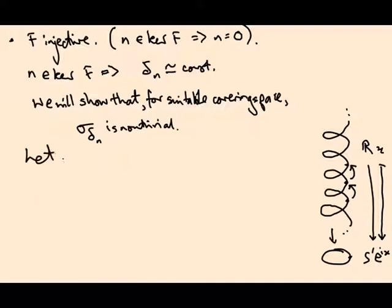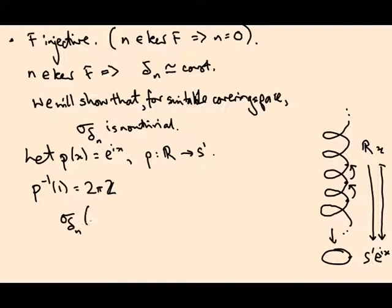So let p of x be e to the i x. So p is the covering space of the circle by the reals. p inverse of 1 is the set of all numbers which are multiples of 2 pi, integer multiples of 2 pi. Those are the ones that exponentiate to the identity. And sigma delta n, you can just check, if I apply it to 2 pi k, what I get is 2 pi k plus n.